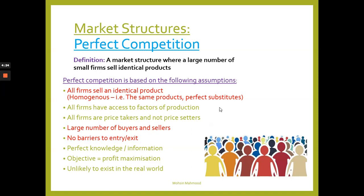Another assumption is that there's perfect knowledge or information - consumers and producers know everything about the product, how much it should cost, and which shops are selling it at a certain price. The main objective of firms in perfect competition is profit maximization.